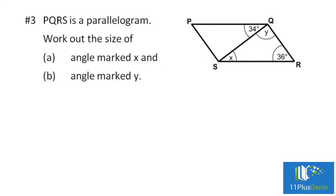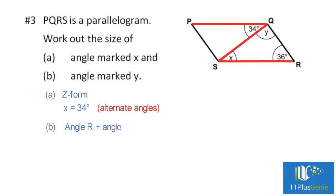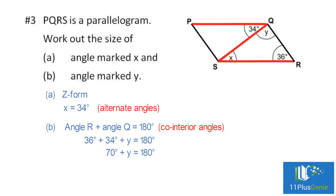Example 3: PQRS is a parallelogram. Work out angle X and angle Y. Part A: this is a Z form, so angle X equals 34 degrees — alternate angles. Part B: angle R plus angle Q equals 180 degrees; they are co-interior angles. 36 degrees plus 34 degrees plus Y equals 180 degrees. 70 plus Y equals 180 degrees. Y equals 180 minus 70, so Y equals 110 degrees.